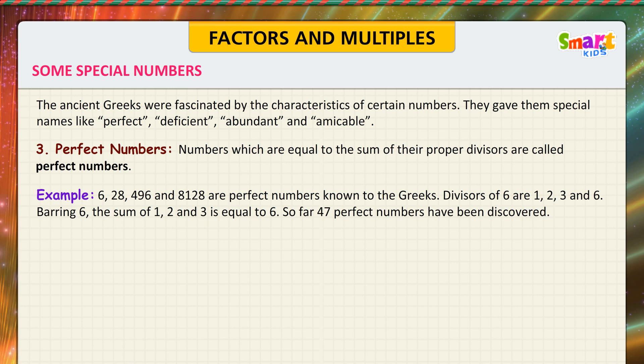6, 28, 496, and 8128 are perfect numbers known to the Greeks. Divisors of 6 are 1, 2, 3, and 6. Barring 6, the sum of 1, 2, and 3 is equal to 6. So far 47 perfect numbers have been discovered.